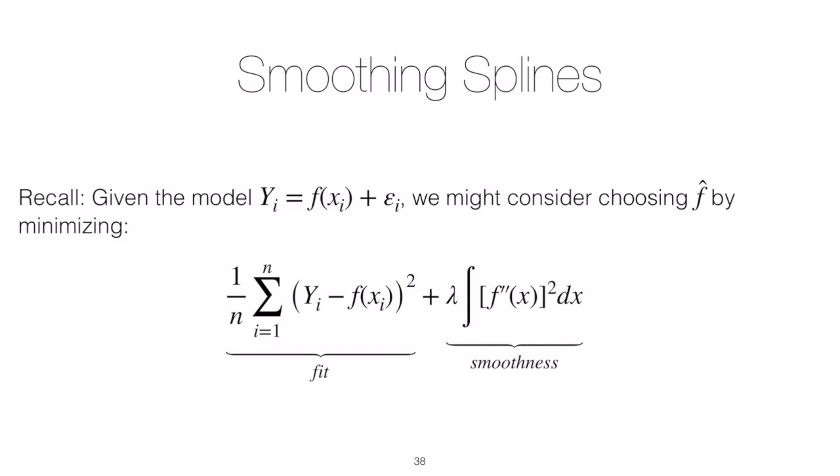For this lesson we'll take a look at how you could fit a GAM using penalized smoothing splines. This will be similar to our lesson on smoothing splines in the univariate case for regression, and we'll use that as an analogy to understand how we could fit a GAM.